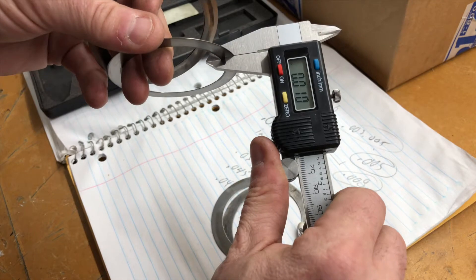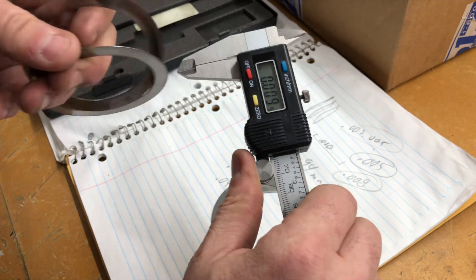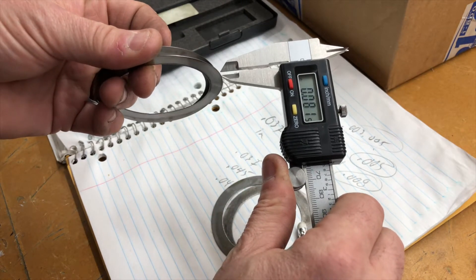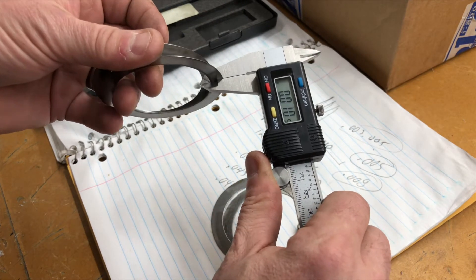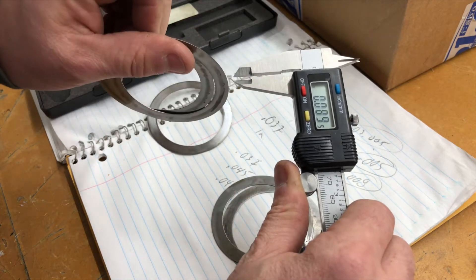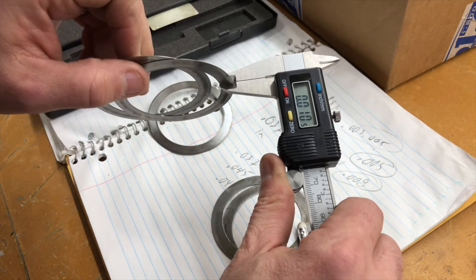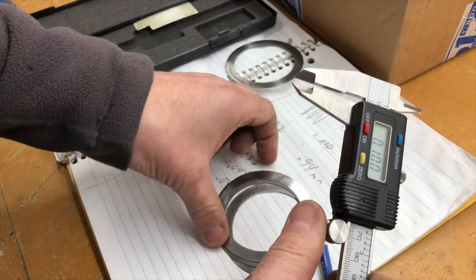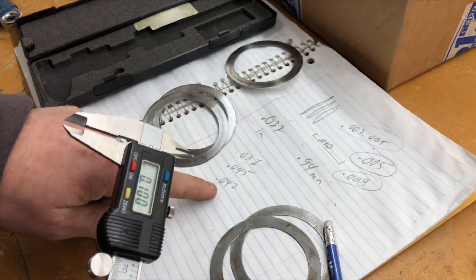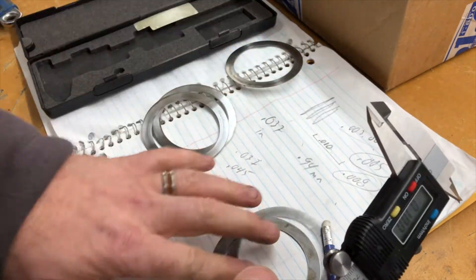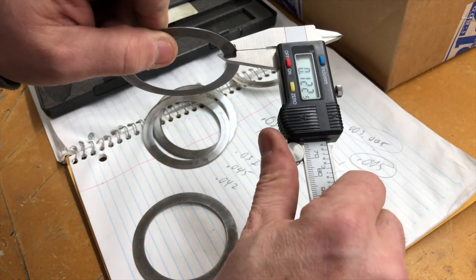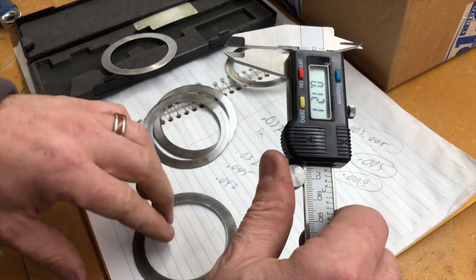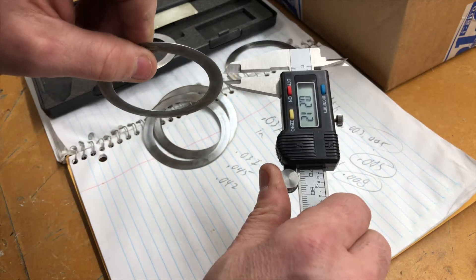So this one here is 10 thousandths, this one's 10, this one's 12 so that's the thicker one, these are two thinner ones. This one's also 12, so if I was to replace a 10 with a 12 that added another 2 thousandths. And this one's even thicker, so that one's 13.